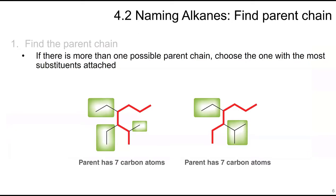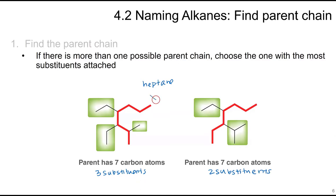After finding the parent chain, if there is more than one correct possible carbon chain, choose the one with the most substituents attached. A substituent is a branch coming off the chain. Both examples here have seven carbon atoms as their parent chain, making them heptane — but the one on the left has three substituents while the other has two, so you choose the one with more substituents.